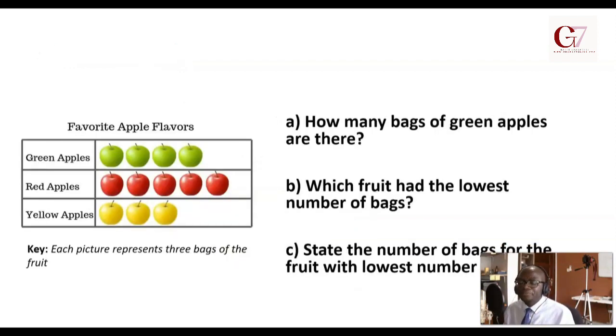Well, let me test you. Here is a pictograph. The key says each picture represents three bags of the fruit. It's the same pictograph we've been looking at. First question: how many bags of green apples are there? Okay, here it is. First you count. How many green apples are there? One, two, three, four. Four green apples. And each picture represents three bags according to the key. So that means three plus three plus three plus three, which is the same as three times four, which is 12 bags. Did you get it correct?